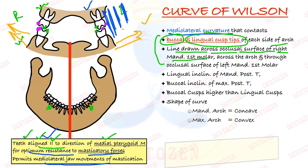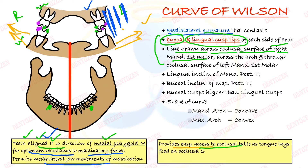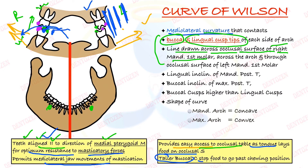Third, the curve of Wilson provides easy access to the occlusal table — the area between the cusps of teeth. When we chew food, our tongue gets easy access to put food on the occlusal surface. Also, the taller buccal cusps — which are higher placed compared to the lower lingual cusps — prevent food from going past the occlusal table. The taller buccal cusps stop food from going past the chewing position so that we can easily chew. Those are the roles of the curve of Wilson.